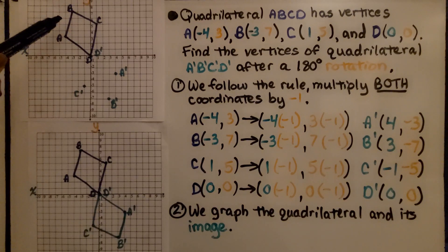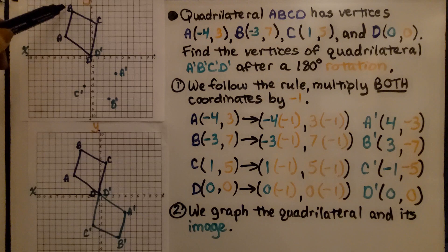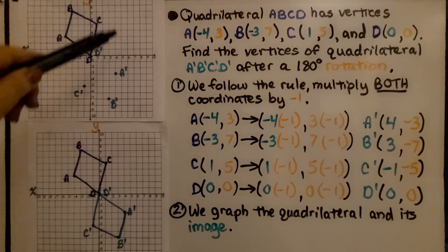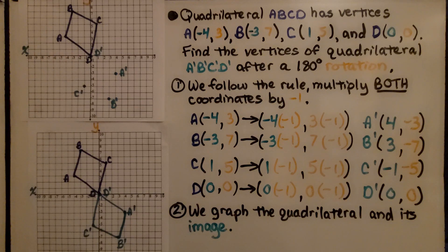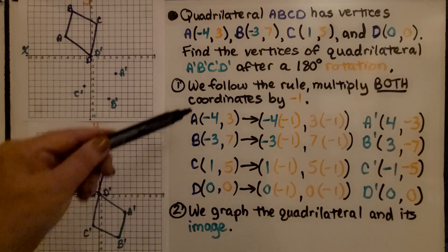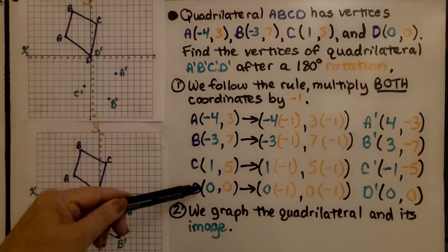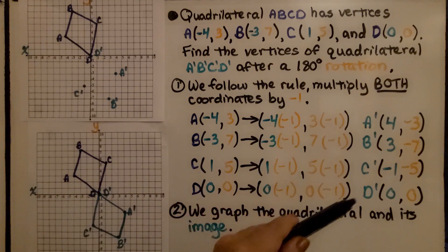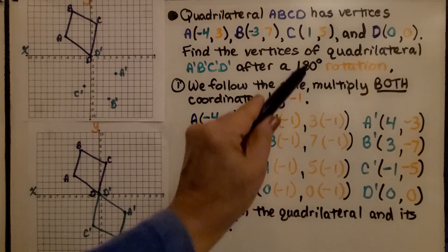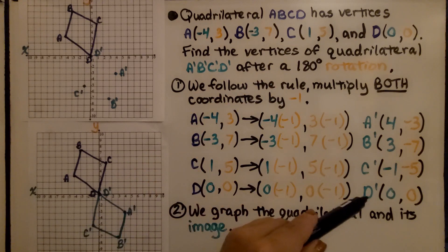Quadrilateral ABCD has vertices A at (negative 4, 3), B at (negative 3, 7), C at (1, 5), and D at the origin (0, 0). Find the vertices of quadrilateral A'B'C'D' after a 180 degree rotation. We follow the rule: multiply both coordinates by negative 1. We have our coordinates for the pre-image, multiply both by negative 1, and we don't need to swap them — with 180 degrees we just multiply both by negative 1.